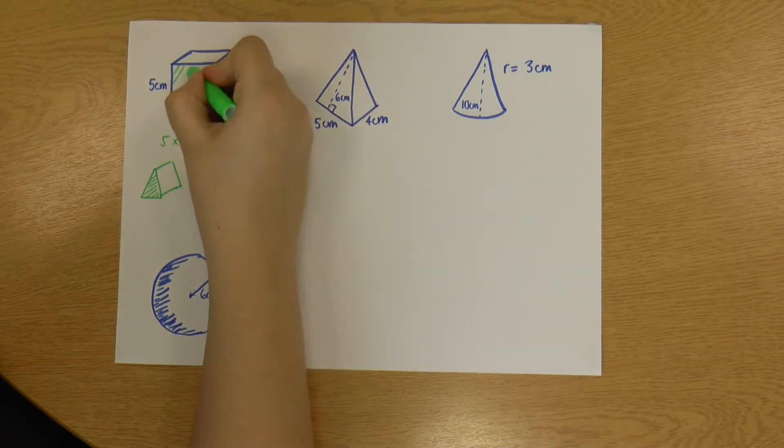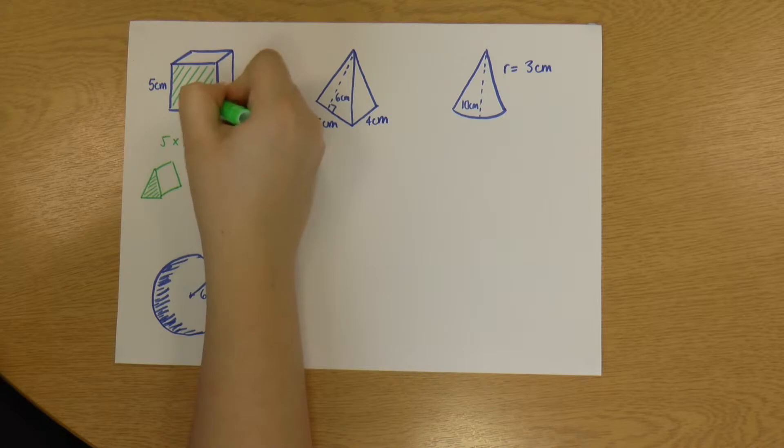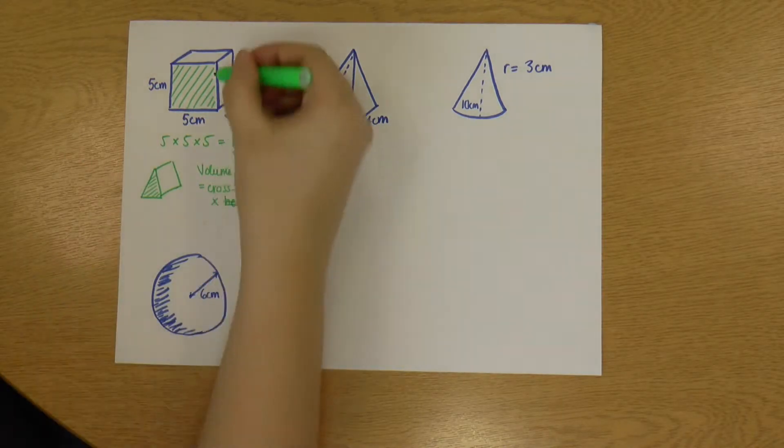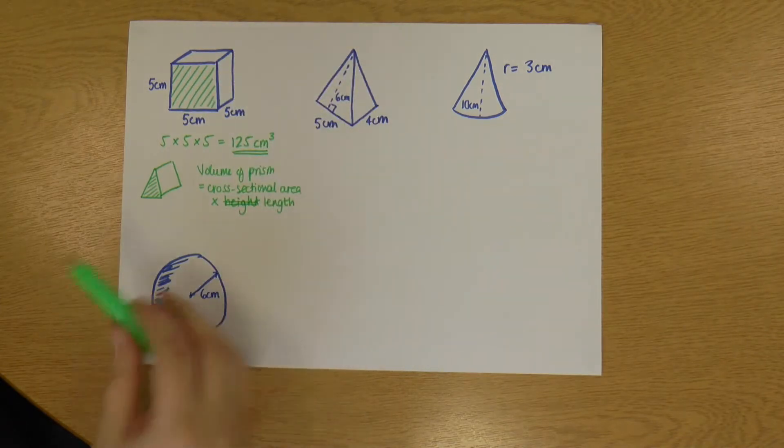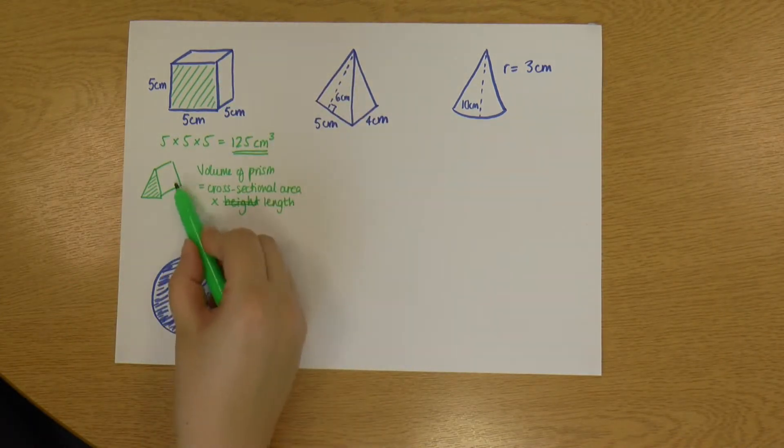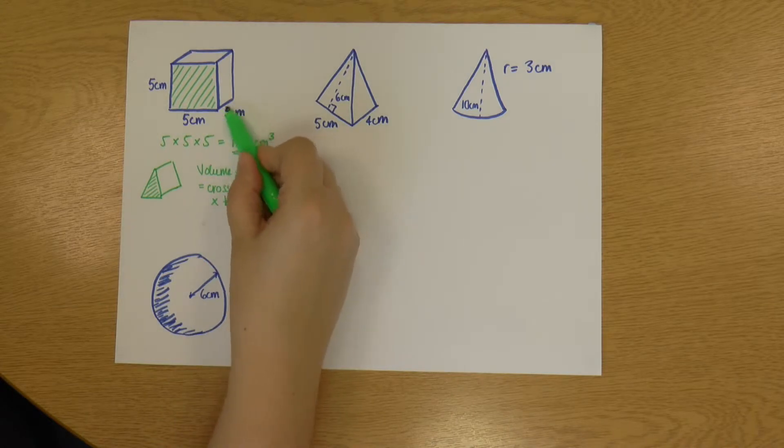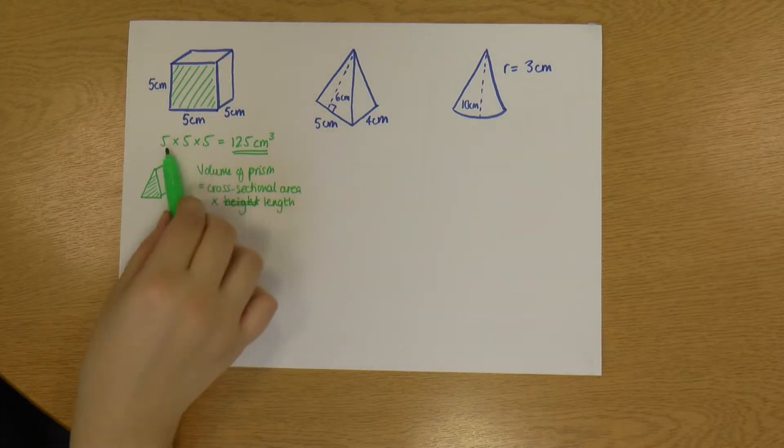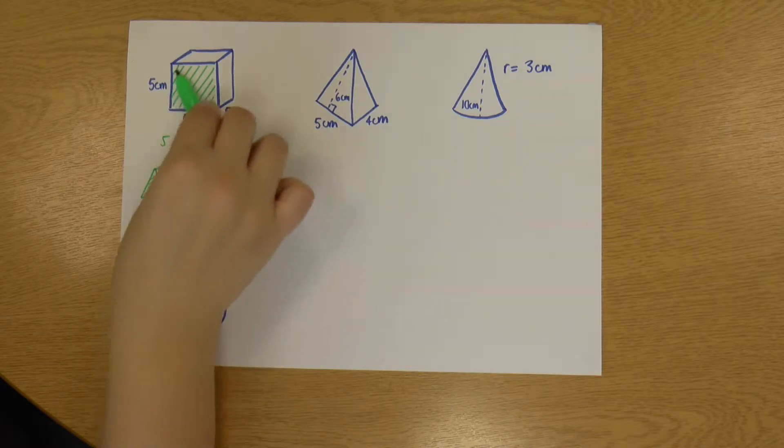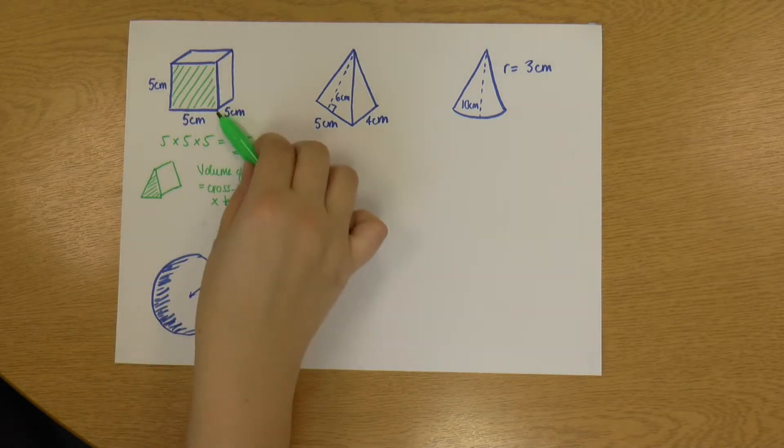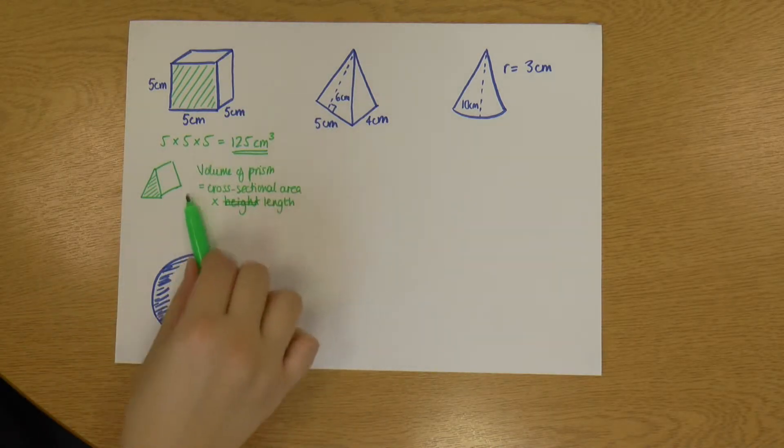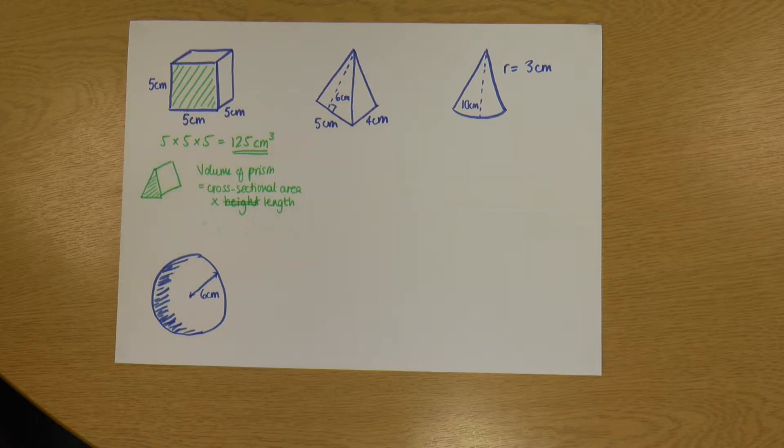And the same is true of this cube or cuboid. They both work the same. So I've got my cross-sectional area which is that bit there. So I find the area of that and multiply it by the length. So in my cuboid, that's the depth. And in this triangular prism, it would be whatever the length of that was. So that's essentially what I've done here. So I've done 5 times 5 to find my area times 5, because that's the depth. So the same rule applies.